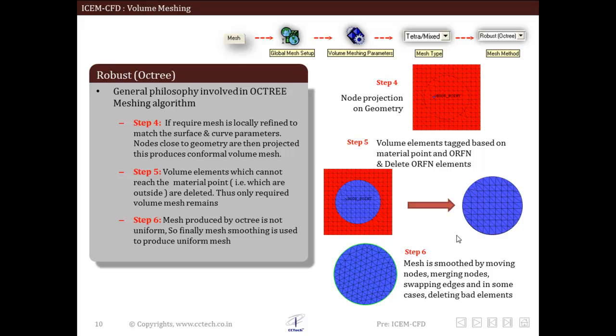It is necessary to improve the quality of this mesh. For this, mesh smoothening is used. Mesh smoothening improves quality of octree volume mesh significantly. Quality of volume mesh should be greater than 0.1.